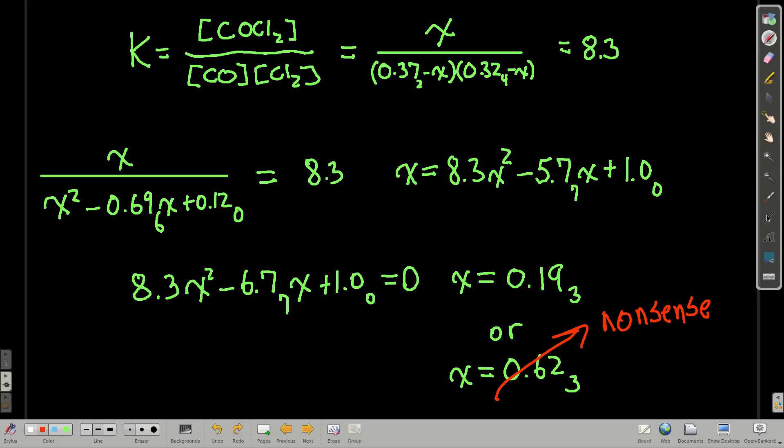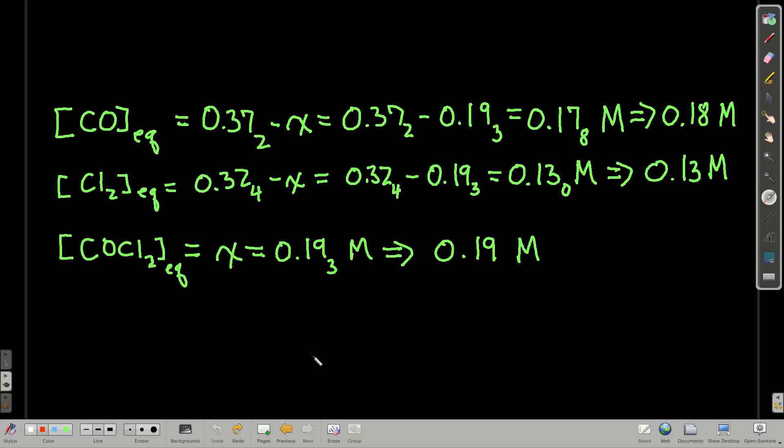Now, to get our answer, what we do is we plug into or substitute back in for X. So at equilibrium, the carbon monoxide concentration will be 0.372 minus X, which is about 0.18 molar. Chlorine, 0.324 minus X, about 0.13 molar. And our product, it's just X, so it's 0.19 molar.